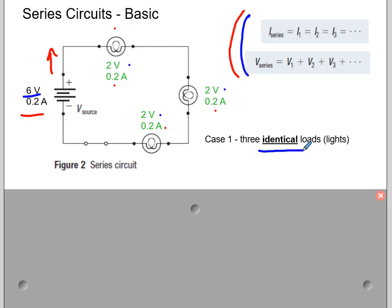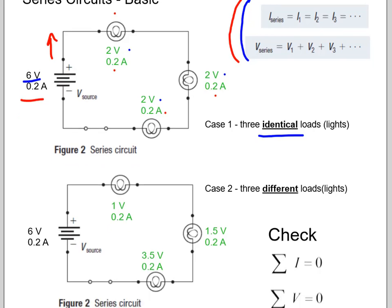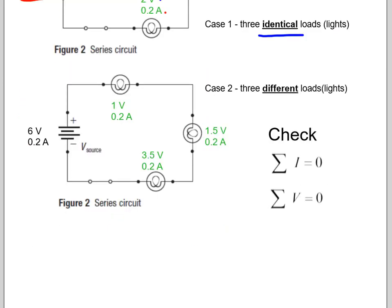It's key to note these are identical loads, so all three lamps were the same. If we change the load though, say we had different types of loads. So we start with 6 volts. You'll notice 1 volt, 1.5 and 3.5. If you total those up you get 6 volts. If you look at the current though, because it's still a series circuit, the current doesn't change. So it's 0.2 amps flowing through all of them. So there's series, that's usually the easier of the two. Parallel is a little trickier.